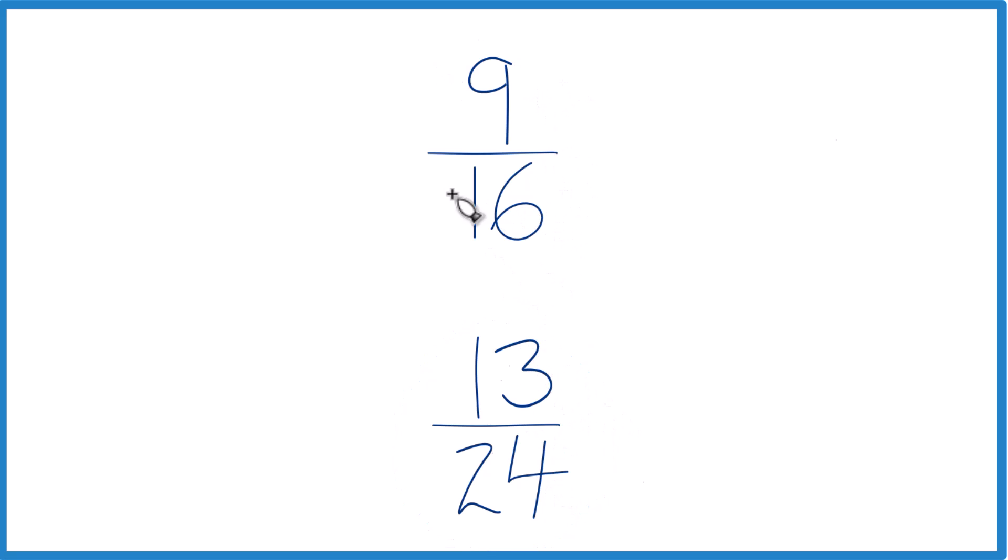The other way is to find a common factor, something that both of these go into. And I know that 16 goes into 48 three times, 24 goes into 48 twice.